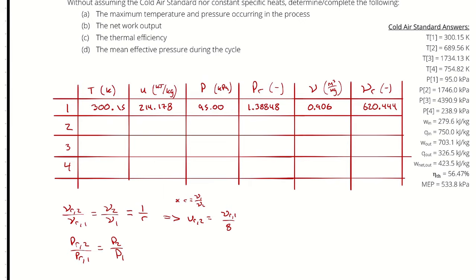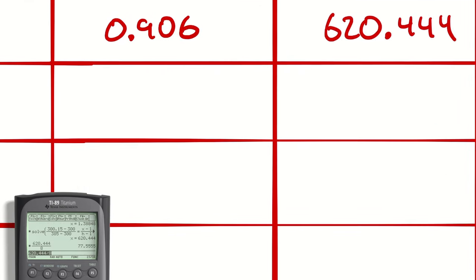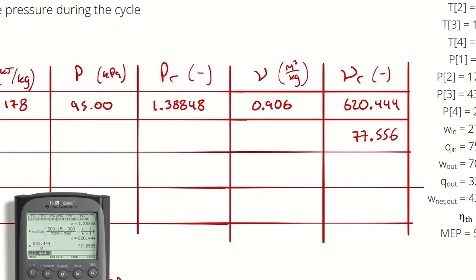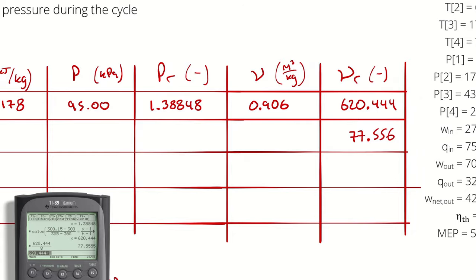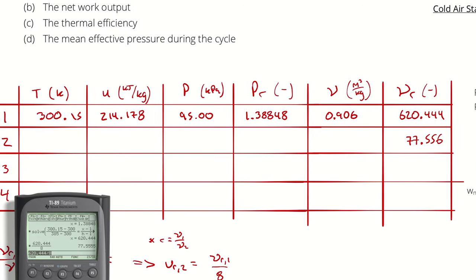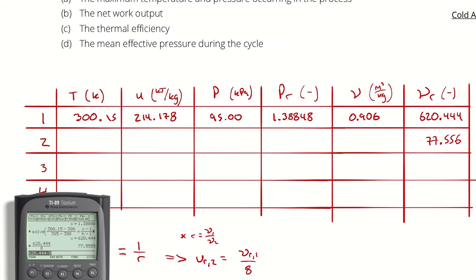Which means I can take VR2 is equal to VR1 divided by 8, because our compression ratio is 8. 620.444 divided by 8 is 77.555. And then from that VR value, we can look up what we need for row number two. Because remember, table A22 in the textbook is one-dimensional. For a given temperature, I can look up everything. And from one of those everything terms, I can look up temperature.